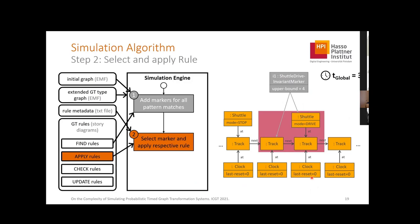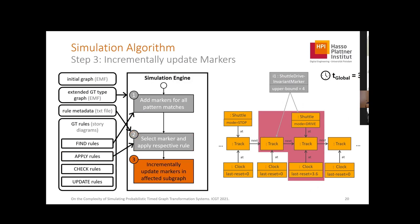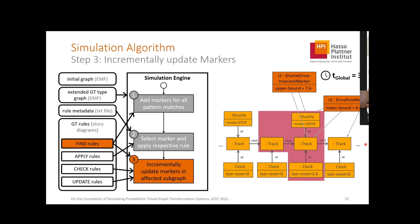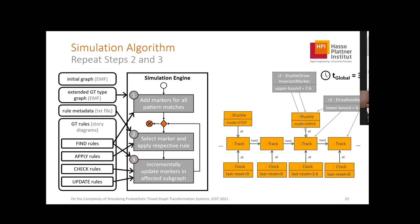We change the affected part of the graph. We also perform a clock reset because this clock is reset by the graph transformation rule, and the time is reset to the global time. Then in the third step, we incrementally update all markers. We check the existing invariant marker, which is no longer valid because it refers to a shuttle on a track where the shuttle is no longer standing, so we remove it. We find a new invariant marker and a new drive rule marker, initializing them with new time bounds.